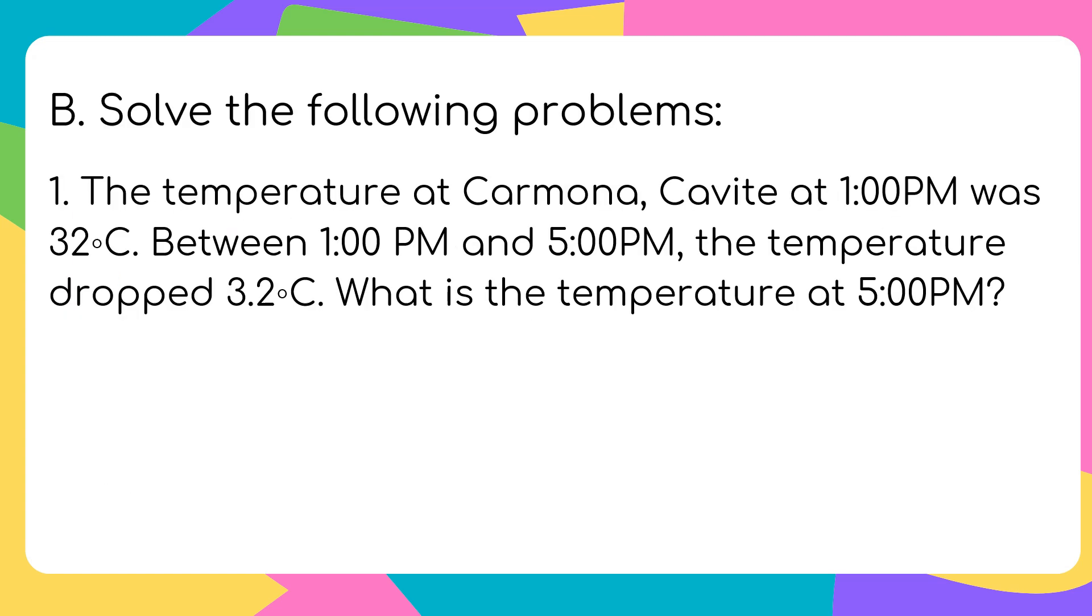Our letter B, solve the following problems. The temperature at Carmona, Cavite at 1:00 PM is 32 degrees Celsius. Between 1:00 PM and 5:00 PM, the temperature dropped 3.2 degrees Celsius. What is the temperature at 5:00 PM? Kapag dropped, bumaba, isusubtract lang natin. 32 degrees Celsius minus 3.2 degrees Celsius. As we all know, dahil ito ay decimal, maglagay tayo ng point and 0. Copy the unit or degree Celsius. 0 minus 2 cannot be, so borrow 1 from 2. 2 will become 1, then 0 will become 10. 10 minus 2 equals 8. Then decimal point. 1 minus 3 cannot be, so borrow 1 from 3. 3 will become 2, then 1 will become 11. 11 minus 3 equals 8. The difference or the temperature at 5:00 PM is 28.8 degrees Celsius.